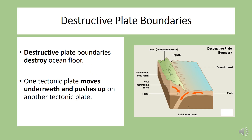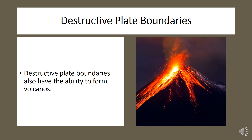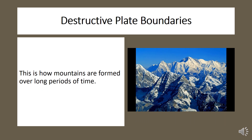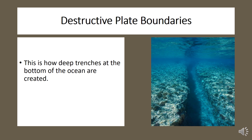The second type is destructive plate boundaries. Destructive plate boundaries destroy ocean floor when one tectonic plate moves underneath and pushes up on another tectonic plate. Just like constructive plate boundaries, destructive plate boundaries also have the ability to form volcanoes. All of the mountains that we see today were formed over long periods of time by destructive plate boundaries. Destructive plate boundaries also create deep trenches at the bottom of the ocean.